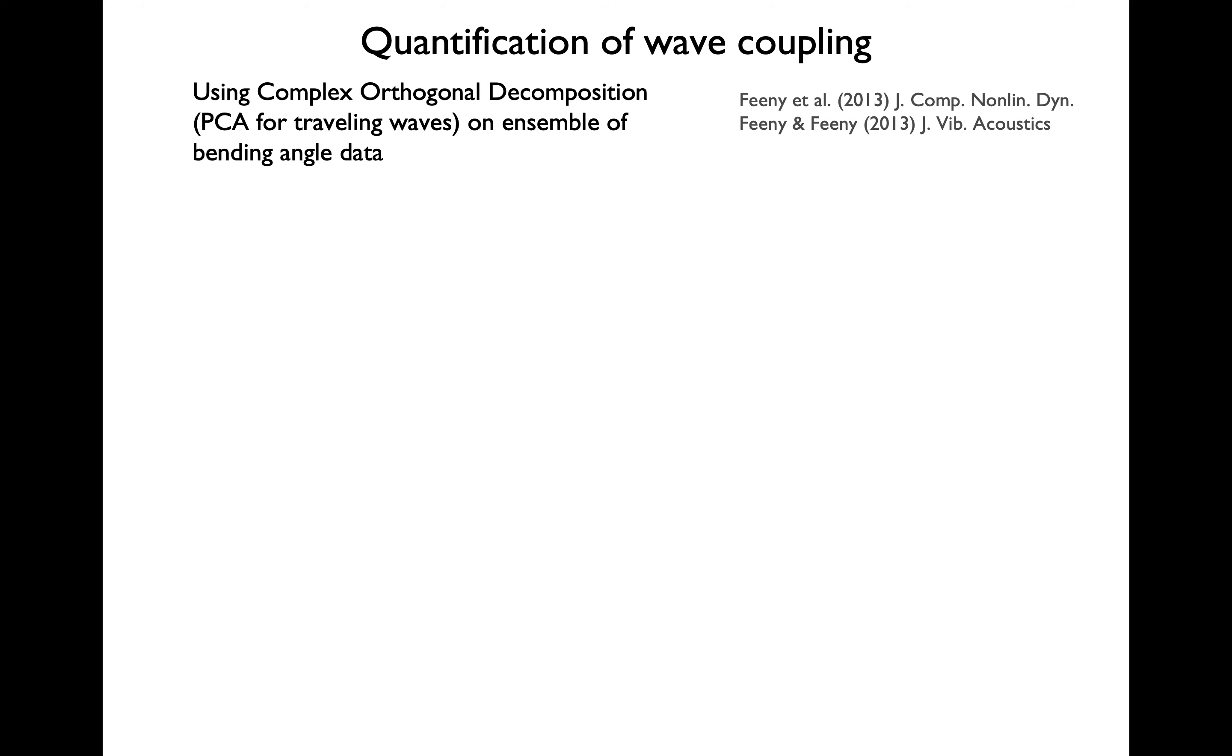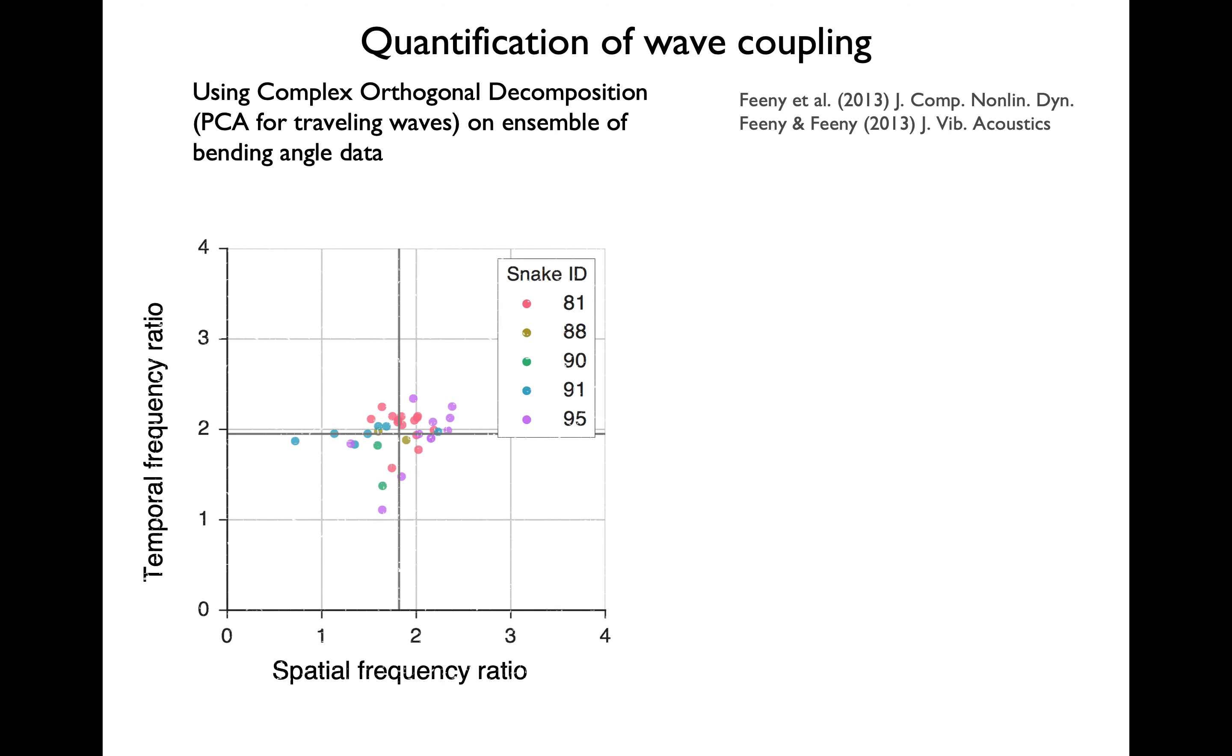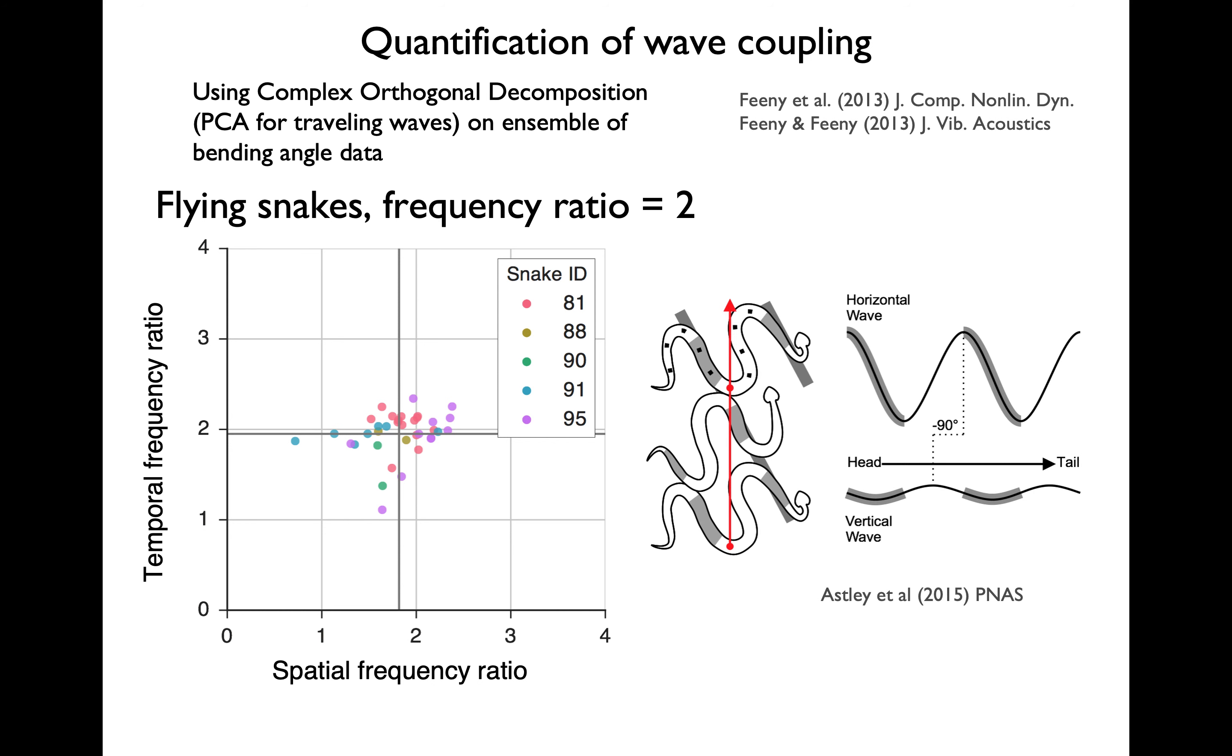We quantified the wave coupling using a technique called complex orthogonal decomposition. We can see that the temporal and spatial frequency ratios are close to two. And it's interesting to note that sidewinders use coupled waves of horizontal and vertical bending. However, the sidewinders waves have a frequency ratio of one. So as far as we know, flying snakes are unique in how these waves are coupled.